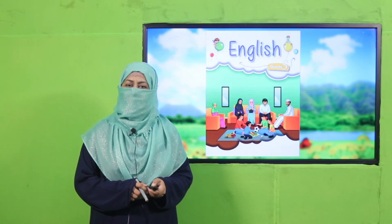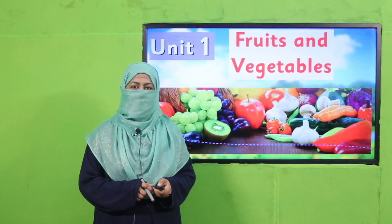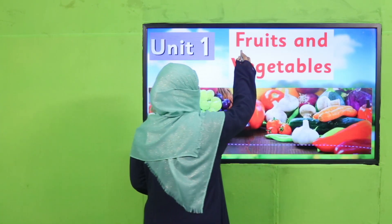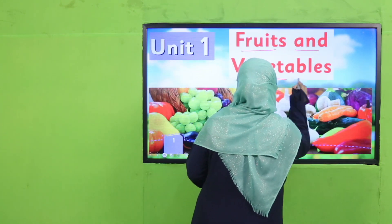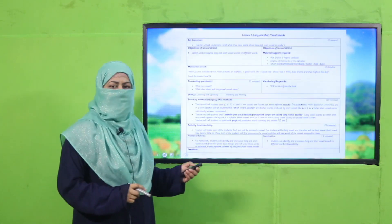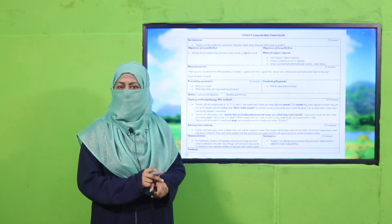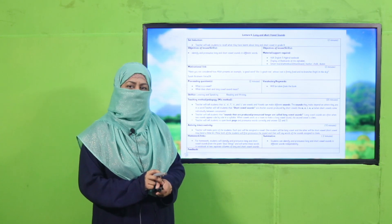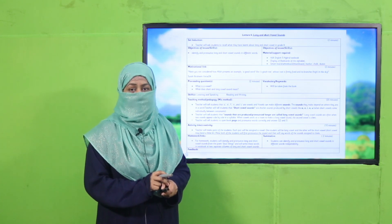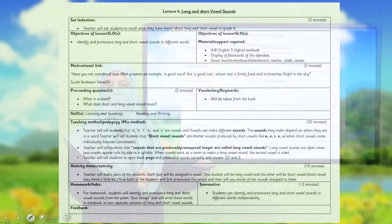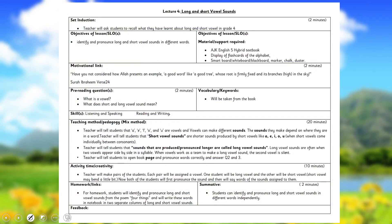Bismillahirrahmanirrahim. Assalamu alaikum, my dear students, how are you? I hope you are enjoying the best of health. I welcome you in my class, English for Grade Five. We are learning Unit One, its title is Fruits and Vegetables. My dear fellow teachers, this lesson plan, PowerPoint presentation, and worksheet links are given — you may click, download, follow it as is, or modify it for your convenience.